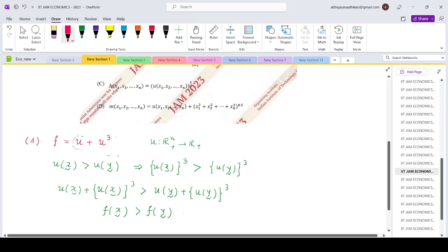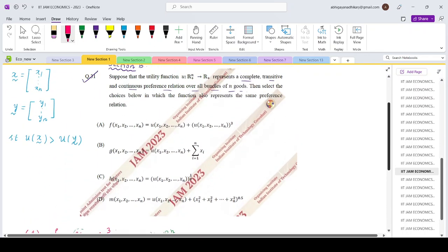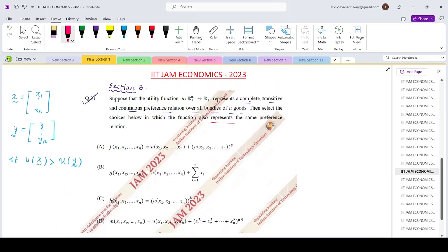So if under the utility function U, if bundle X gives the high utility than compared to bundle Y, then the same order is preserved under this utility function F. So option A is correct. It represents the same preference relation as U.